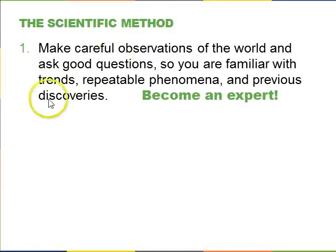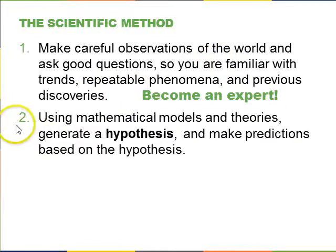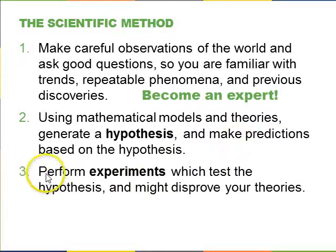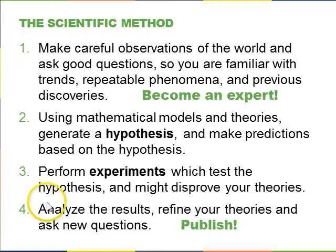So, the scientific method, I have my own sort of four-step scientific method. Number one is make careful observations of the world around you, and ask good questions so that you're familiar with the trends, repeatable phenomena, and previous discoveries. So, become sort of an expert in your field. Number two is using mathematical models and theories generate a hypothesis, something that you can test, that makes predictions. And then step three is perform experiments which test this hypothesis, and design your experiments so that you might actually disprove your theories. Now step four is analyze your results. If your experiments disagree with your hypothesis, then you need to refine your theories, change your hypothesis, until these come into agreement. And, of course, publish your results so that other people can become experts and continue your work.